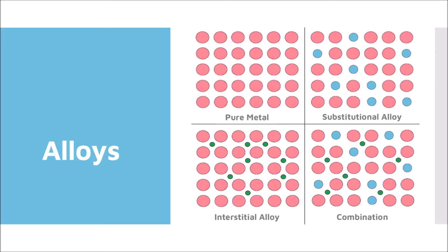The other type of alloy is an interstitial alloy. In an interstitial alloy, the original pattern has not been disrupted. However, other atoms have been inserted into the gaps of the pattern.